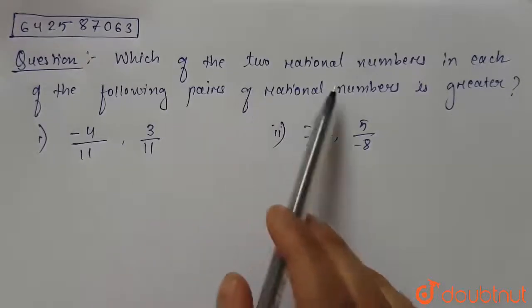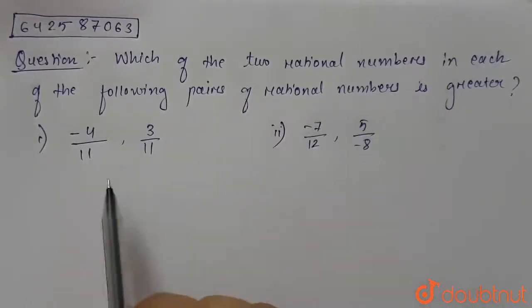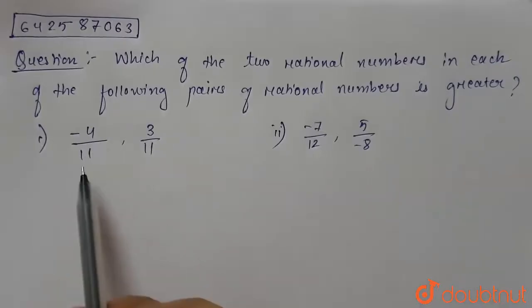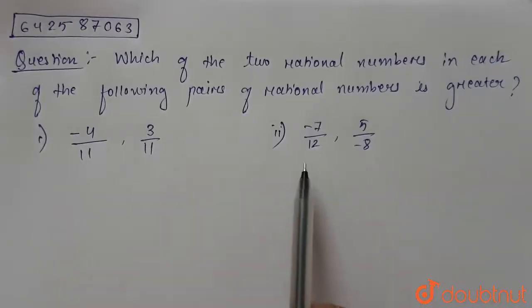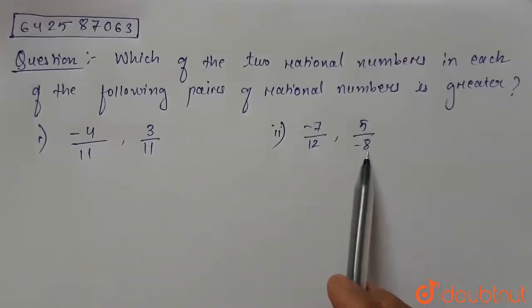Which of the two rational numbers in each of the following pairs of rational numbers is greater? The first pair is given as -4/11 and 3/11, and the second pair is given as -7/12 and 5 divided by -8.